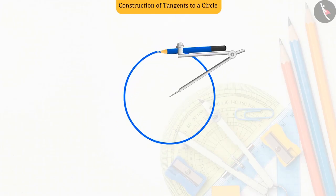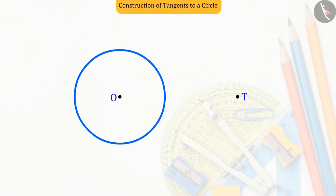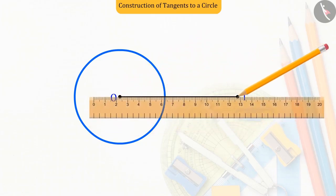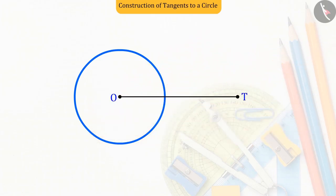Let us now see how tangents can be drawn on a circle from a point outside the circle. A circle whose center is O. Let the point outside be T. Tangents are to be drawn on the circle. To do this, first, we join the points O and T, which gives us the line segment OT.